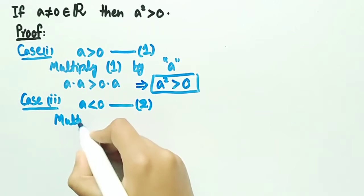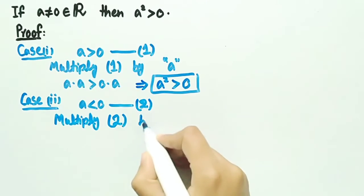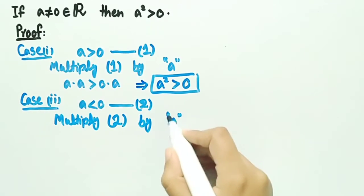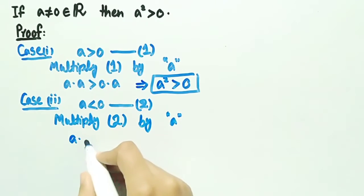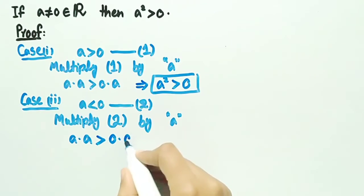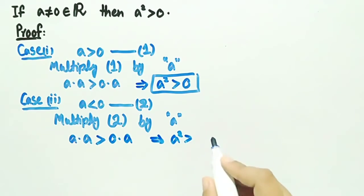Now we will multiply equation 2 by a and we get a multiplied by a. Since here a is a negative number, and whenever we multiply a negative number by an inequality, the inequality changes. So we will get greater than zero into a, which implies a square is greater than zero.